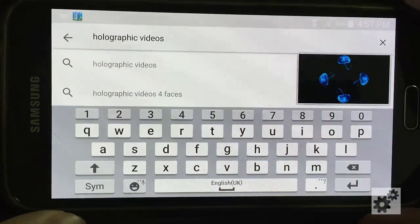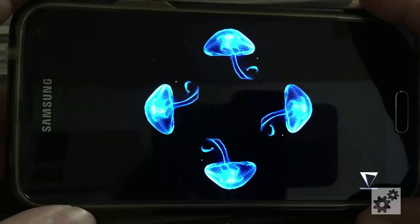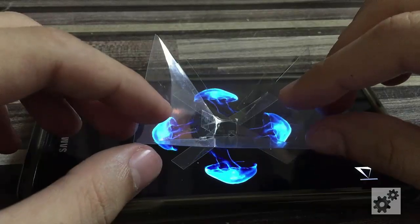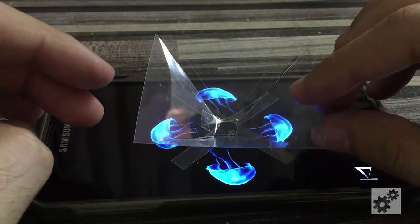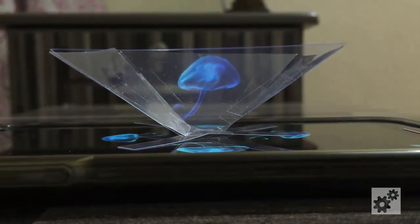Now go to YouTube and type holographic videos. You'll see all these videos pop up which will make no sense when you look at them normally. Now place your plastic projector right in the center. And there it is, your self-made simple 3D hologram projector.